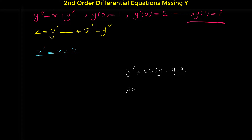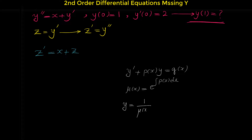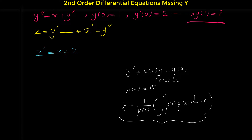first we have to find the integrating factor, which we usually denote mu(x), where mu equals e to the power of the integral of p(x) dx. After we find the integrating factor, y equals 1 over mu(x), times the integral of mu times q (the function on the right side), dx, plus c. We use this formula for solving first order linear differential equations.